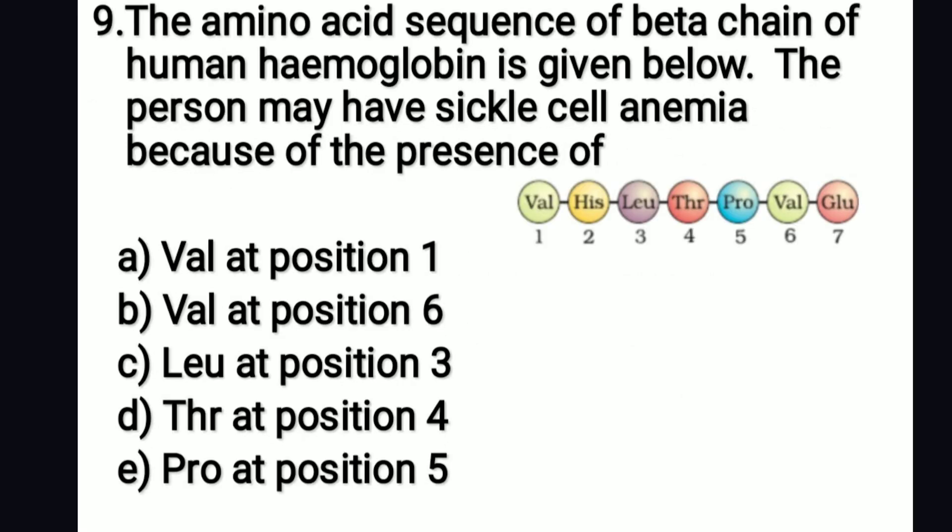The amino acid sequence of the beta chain of human hemoglobin is given. The person may have sickle cell anemia because of the presence of: option B is the right answer — valine at position 6. In the normal case, the 6th position is occupied by glutamic acid, which is replaced by valine due to a point mutation in the beta globin gene.